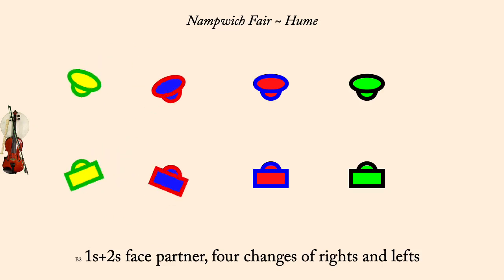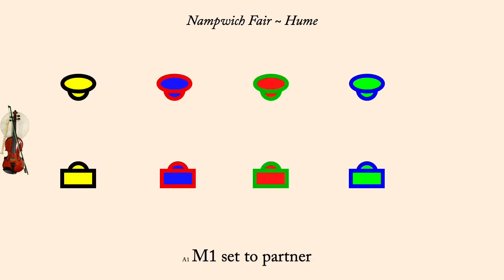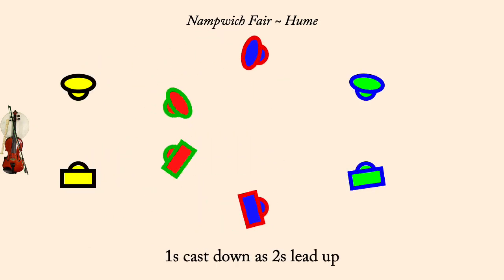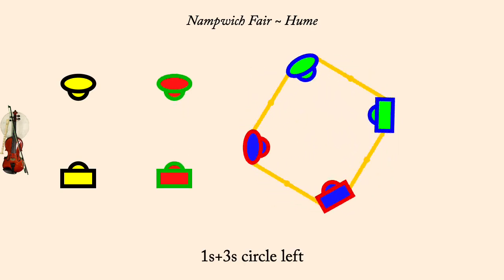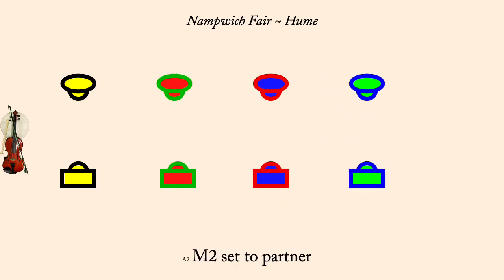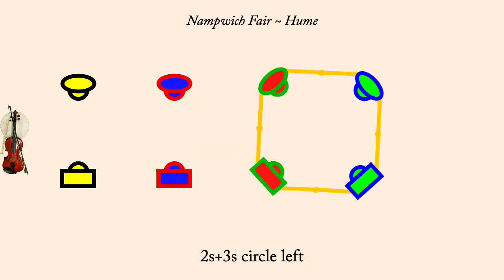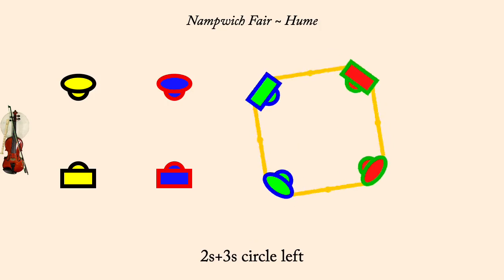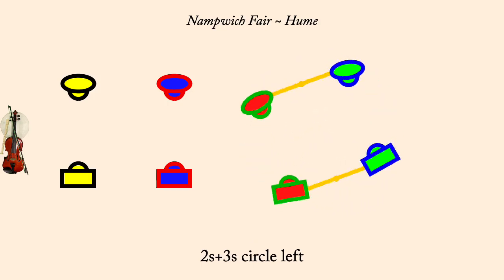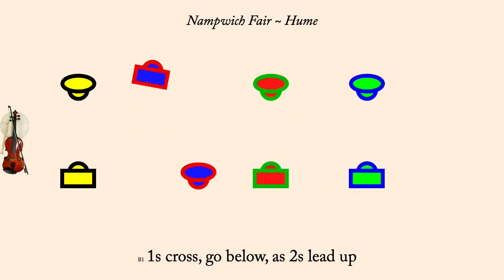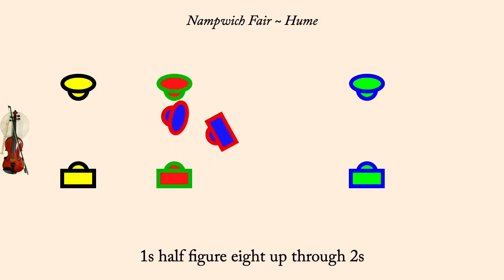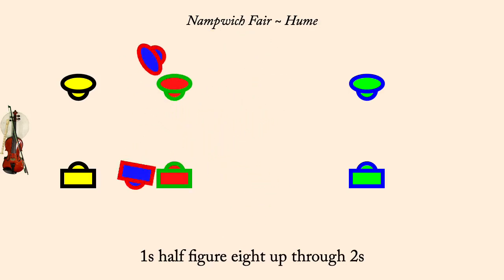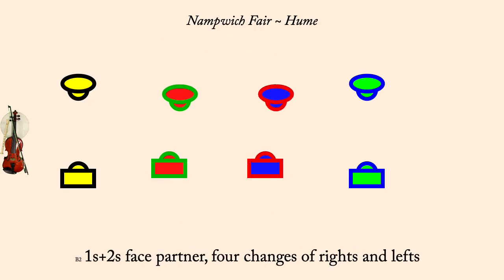Man one set. Ones cast down as twos lead up. Ones and threes circle left. Man two set. Twos cast down as ones lead up. Twos and threes circle left. Ones cross, go below, as twos lead up. Ones half figure eight up through twos. Ones and twos four changes of rights and lefts.